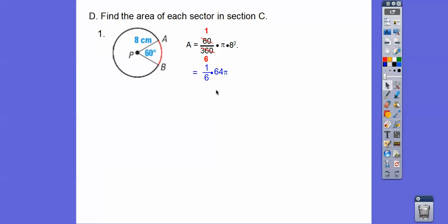So the zeros cancel, so 1/6 times 64π. And then I think the only thing I can do is 2. 2 goes in there 3 times, 2 goes in there 32 times, so 32π over 3. And remember, area is in square units, so centimeters squared.